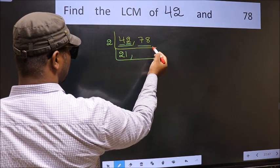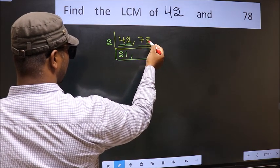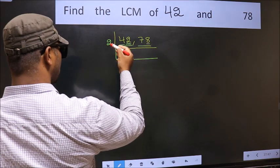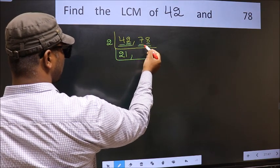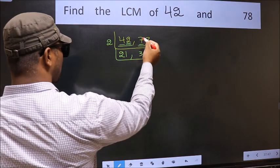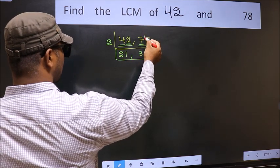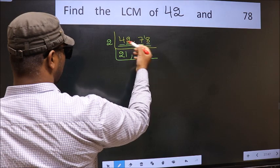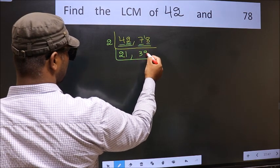Now the other number 78. Last digit 8, even so this is divisible by 2. First number 7, a number close to 7 in 2 table is 2, 3, 6. 7 minus 6, 1, 1 carried forward 18. When do we get 18 in 2 table? 2, 9s, 18.